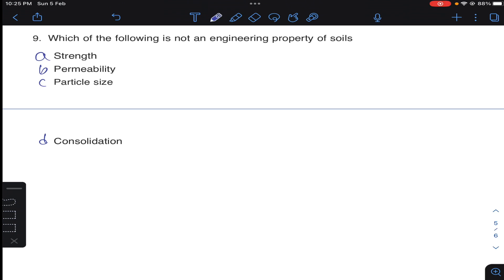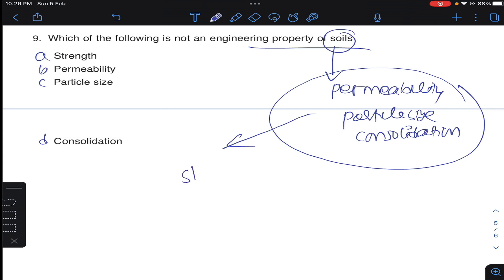Coming to nine: which of the following is not an engineering property of soils? Generally engineering properties of soils are permeability, particle size, consolidation, and strength. Generally soils will have shear strength, not direct strength, so answer A for question number nine.